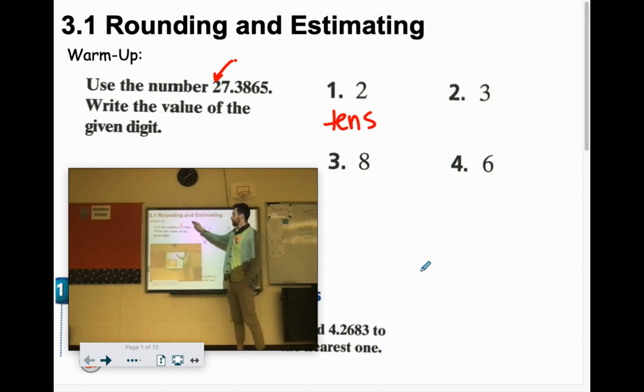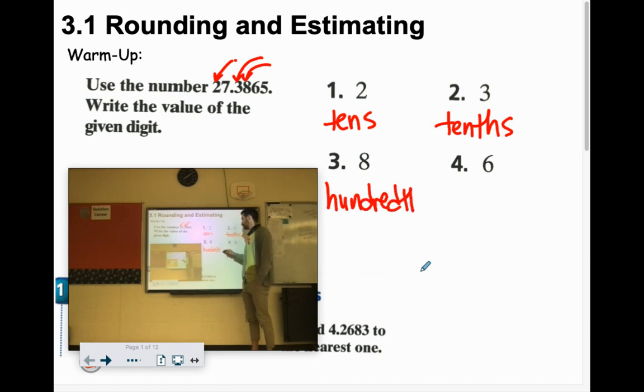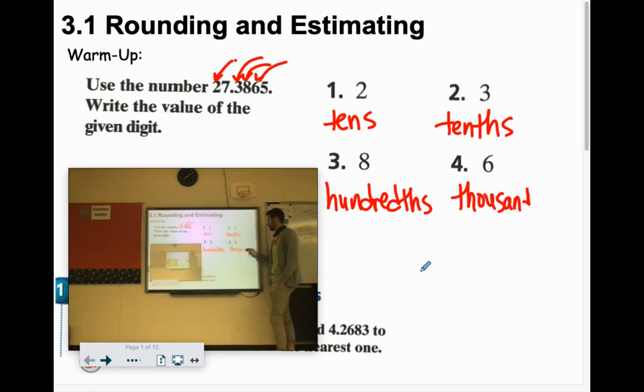Three, that first decimal column after the decimal is called the tenths. Eight is in the second spot, so that is the hundredths. And the sixth is in the thousandths place. Thousandths.